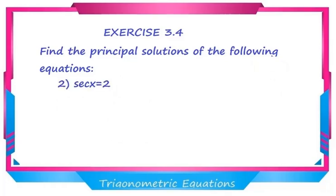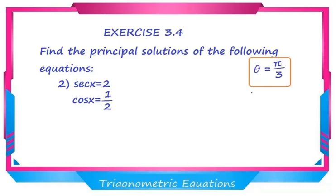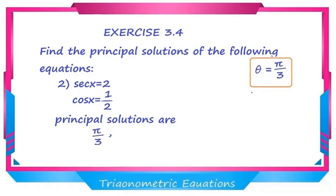Next: find the principal solution of sec x = 2. The reciprocal of sec x is cos x, so write cos x = 1/2. This is positive, and cos(π/3) = 1/2, so θ = π/3. Cos is positive in the first and fourth quadrants, so the principal solutions are π/3 and 2π − π/3 = 5π/3.